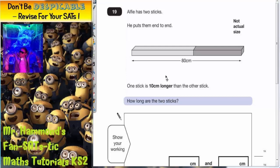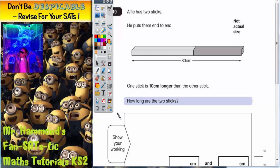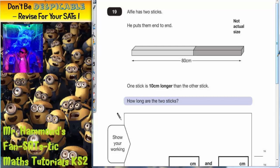Question 19. Alfie has two sticks. He puts them end to end. One stick is 10 centimetres longer than the other stick. How long are the two sticks?